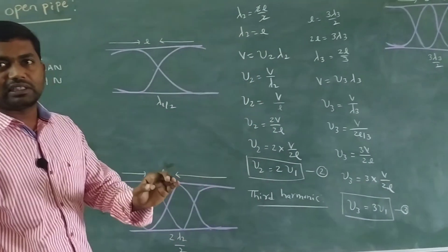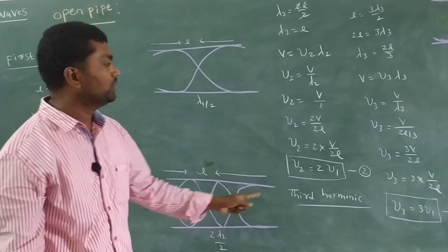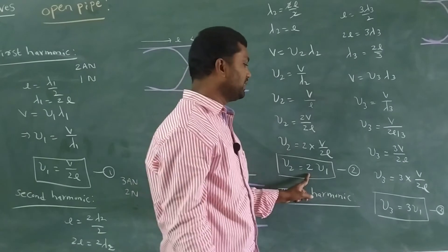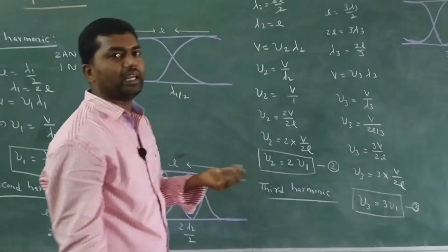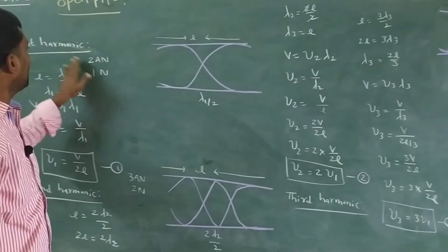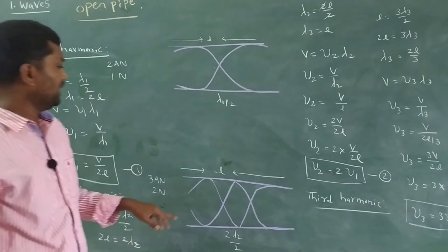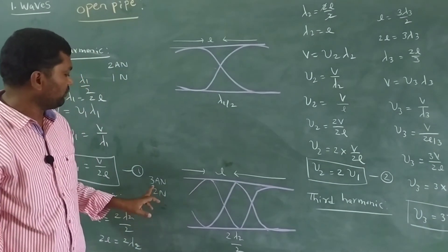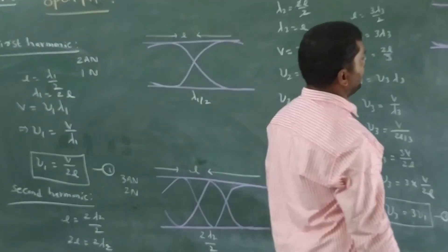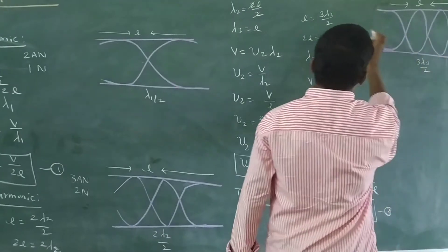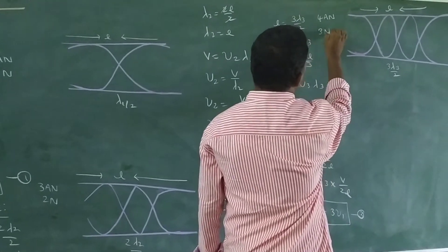Equation 1 is the fundamental frequency or 1st harmonic. Equation 2 is the 2nd harmonic. Equation 3 is the 3rd harmonic. In terms of nodes and antinodes: the 1st harmonic forms 2 antinodes and 1 node; the 2nd harmonic forms 3 antinodes and 2 nodes; the 3rd harmonic forms 4 antinodes and 3 nodes.